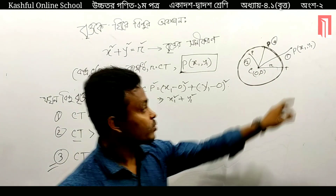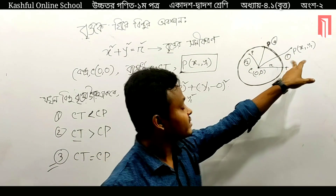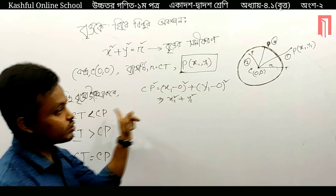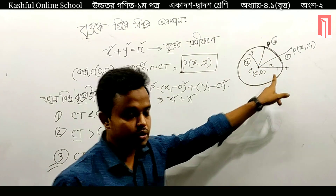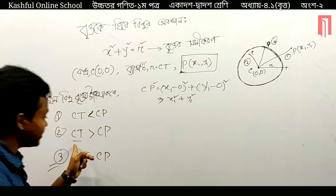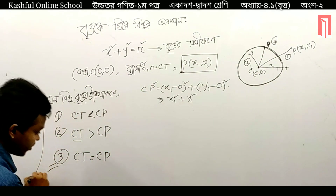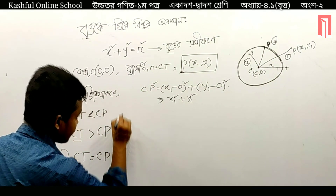CT is less than CP — did you believe that? Now, CT is greater than CP — it is the third condition, to be important.